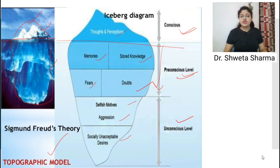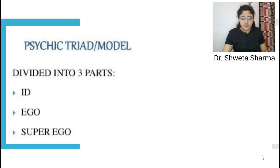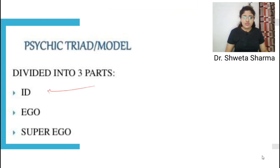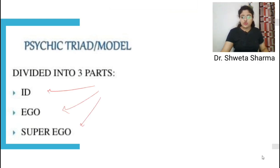These are the topographical models of Sigmund Freud's theory. Now we will cover the psychic model. In the psychic model, the human mind is divided into three parts: id, ego, and super-ego.